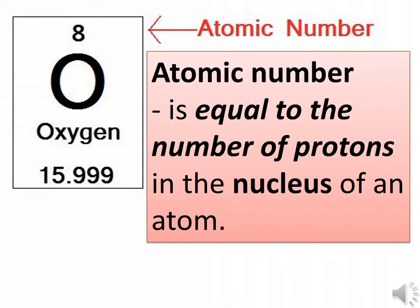Atomic number is equal to the number of protons in the nucleus of an atom. The atomic number is a common characteristic of all atoms of an element.